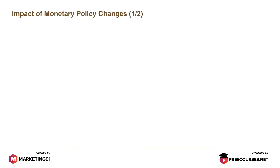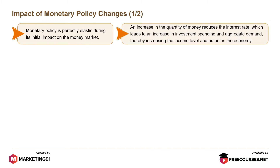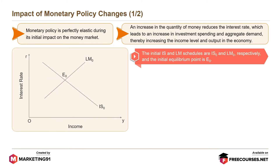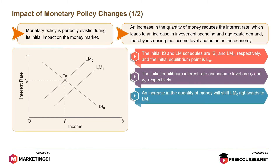Now let's understand the impact of monetary policy changes. Monetary policy is perfectly elastic during its initial impact on the money market. An increase in the quantity of money reduces the interest rate, which leads to an increase in investment spending and aggregate demand, thereby increasing the income level and output in the economy. The initial IS and LM schedules are IS0 and LM0 respectively, and the initial equilibrium point is E0. The initial equilibrium interest rate and income level are R0 and Y0 respectively. An increase in the quantity of money will shift LM0 rightwards to LM1.